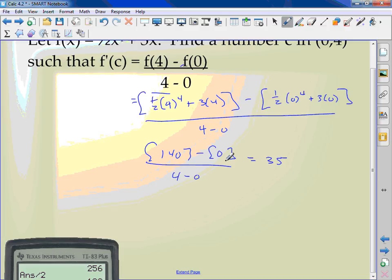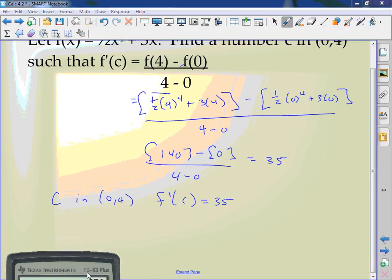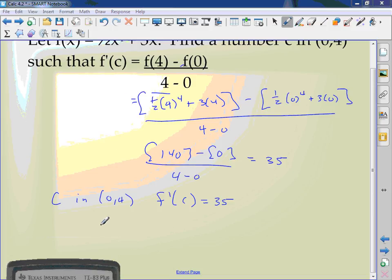So I have to find a number c in (0,4). We have to find the c in (0,4) that we know that f'(c) is 35. Take the derivative of f(x), which was one-half x to the fourth plus 3x.